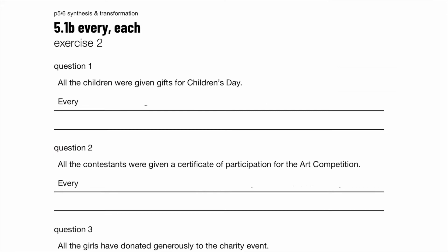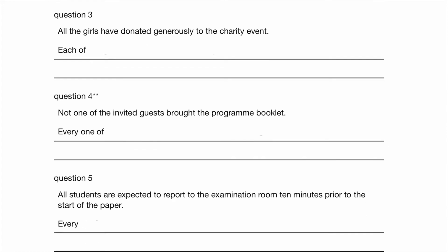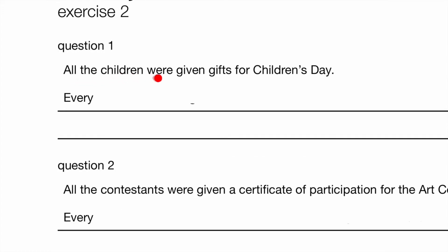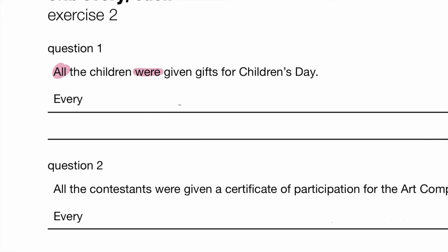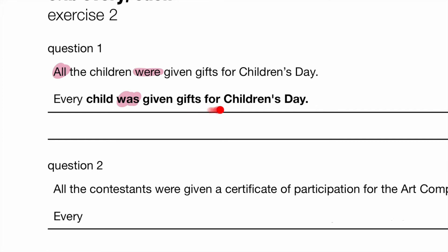Exercise 2, again dealing with 'every' and 'each.' All the children were — past tense and plural. We cannot use 'children' again. So: every child was — make sure you use the past tense — except we are using the singular form now. Every child was given gifts for Children's Day. Make sure you do not forget the apostrophe S, your full stop, and your capital letters.